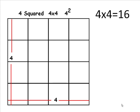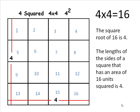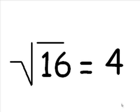What does 4 squared look like? 4 times 4 is 16. Here we have 16 squares. The length of each side of the larger square happens to be 4. Square root of 16 is 4. Square root of 16 equals 4.